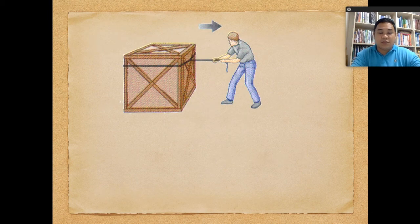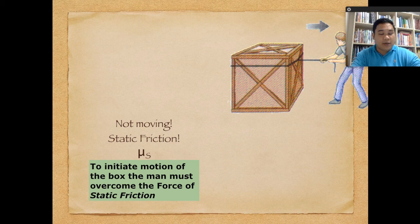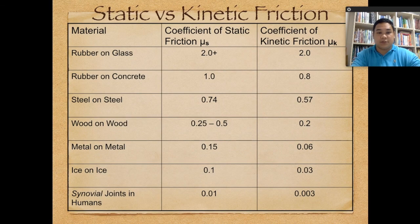Let's distinguish further using this illustration of static and kinetic friction. Since the object is not moving, the man must overcome the force of static friction to initiate motion. Once the object is moving, kinetic friction applies and we use the coefficient of kinetic friction.